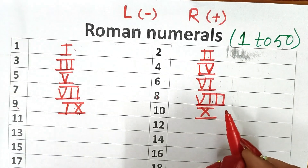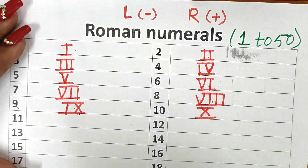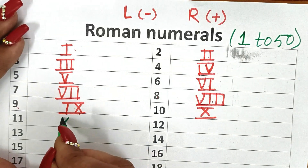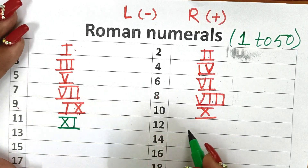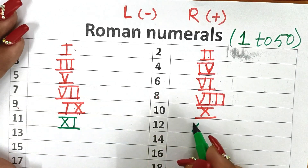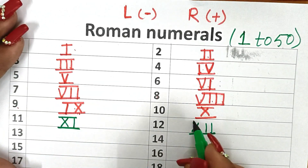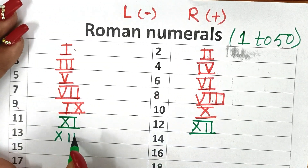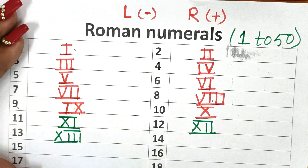So let's start writing from 11. How do we write 11? 11 is first we write 10 and then add 1 to it, so this is XI. Again 12 is X, I, I — XII. 13 is X, I, I, I — XIII.